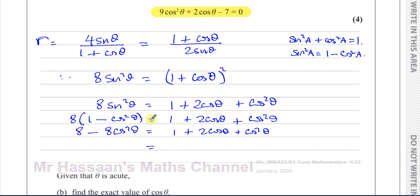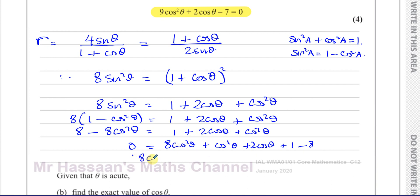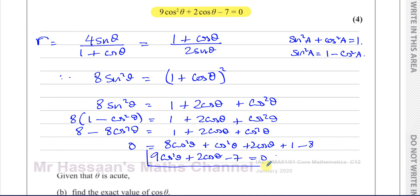Bringing all terms to one side and setting equal to zero: 8 cos²θ + cos²θ gives 9 cos²θ, plus 2 cos θ, and 1 − 8 gives −7. So we get 9 cos²θ + 2 cos θ − 7 = 0, which is exactly what we had to show.